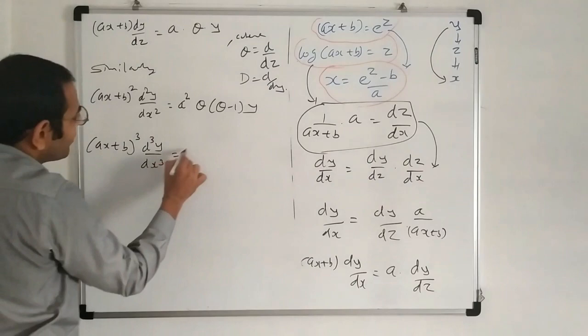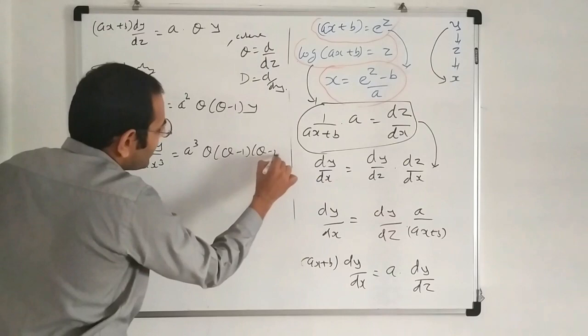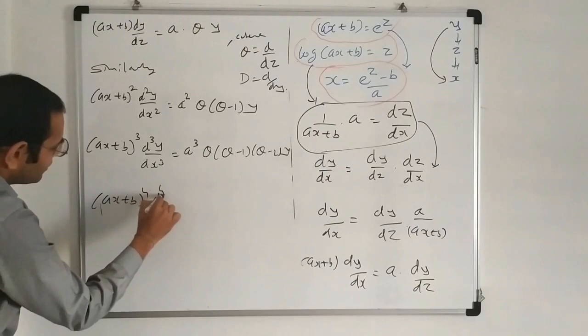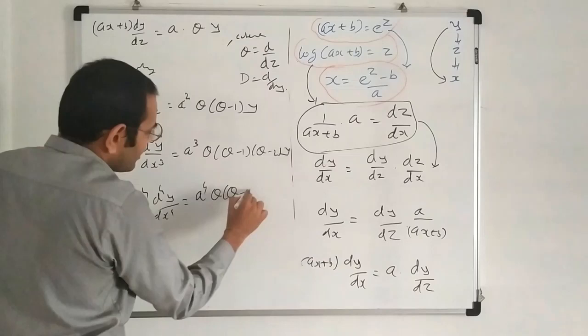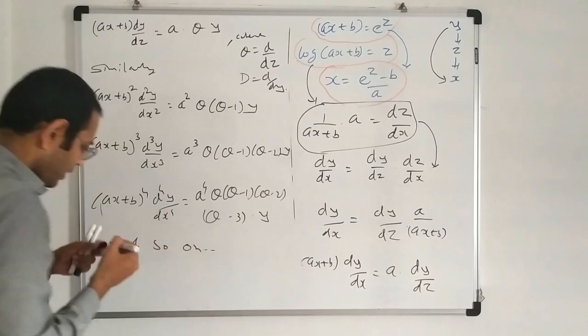Similarly, for (AX + B)^3 times the third-order derivative, we multiply by A^3, giving A³·θ(θ − 1)(θ − 2)·Y. For the fourth-order derivative term, we get A⁴·θ(θ − 1)(θ − 2)(θ − 3)·Y, and so on.